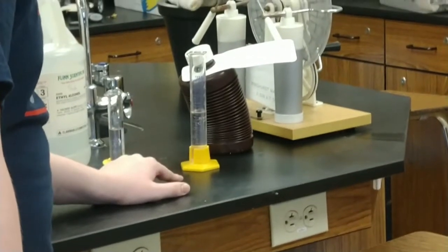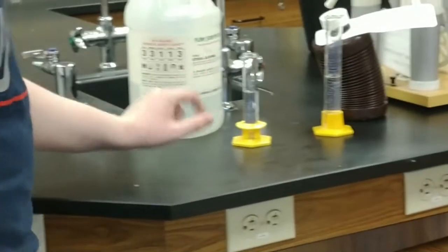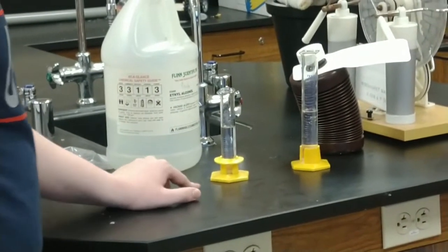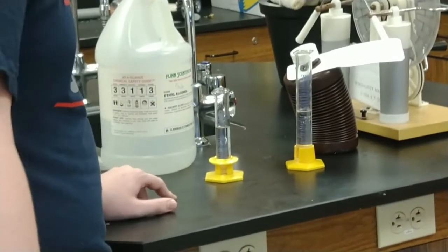First, we have our 30 centimeters cubed of hydrogen peroxide, and then we have our 20 centimeters cubed of ethanol, which we mix together and set on fire.